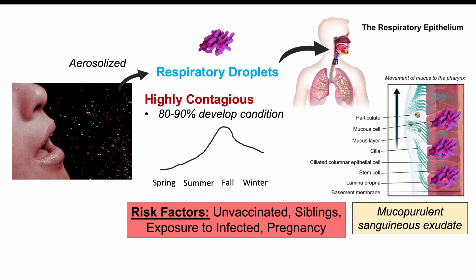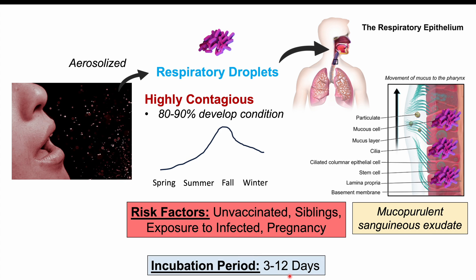When the bacteria multiply and grow within the respiratory epithelium, they start to produce a mucopurulent and sanguinous exudate, which can cause issues with breathing. Atelectasis is another issue that can occur. The incubation period is three to 12 days — before seeing symptoms, it's normally three to 12 days from the time of exposure.